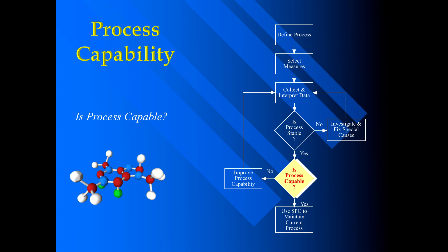This is a flowchart. First we have to define the process, then we have to select the process and select the measuring method. Then we have to collect the data and do the analysis. If the process is stable, go to process capability and check the process capability.